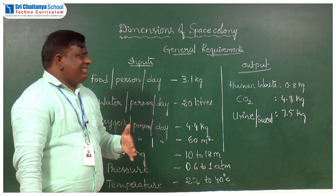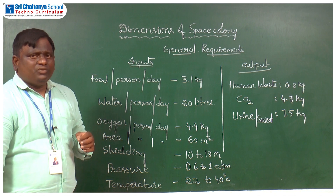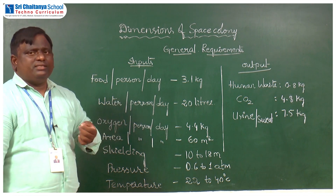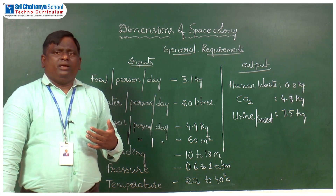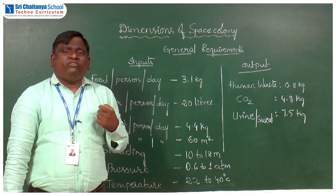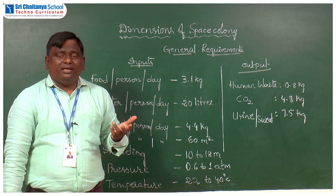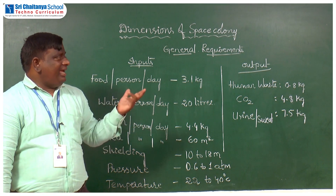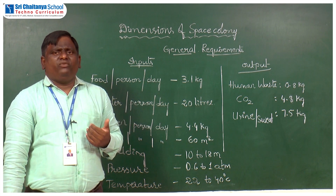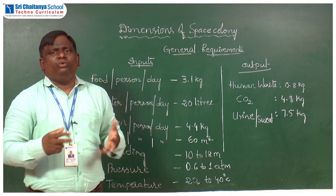Apart from water, the next important aspect is oxygen. A healthy person on Earth per day consumes 4.4 kg of oxygen — a healthy human being, 24 hours a day, will inhale 4.4 kg of oxygen. And the output is carbon dioxide: they will exhale 4.8 kg of carbon dioxide. We inhale 4.4 kg and exhale 4.8 kg because of biological processes in the human body.